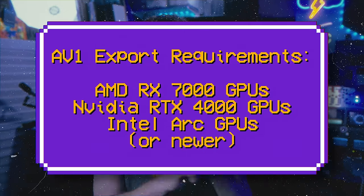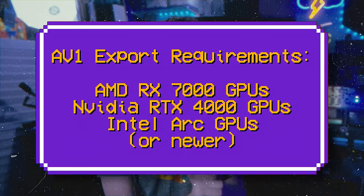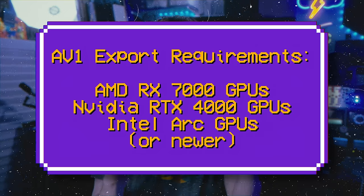If you have DaVinci Resolve Studio and an AMD RX 7000 Series graphics card, NVIDIA RTX 4000 Series, or Intel Arc graphics card, you can use the hardware AV1 encoder option as well, which is going to be super great. Otherwise, you want to be using H.265 with your graphics card encoder. Graphics card accelerated encoding is a feature that's supposed to be locked behind the paywall of DaVinci Resolve Studio, which is why I said this mostly applies there.